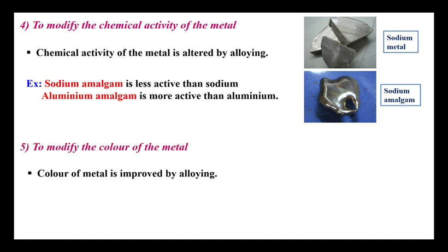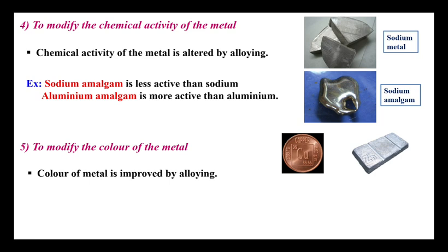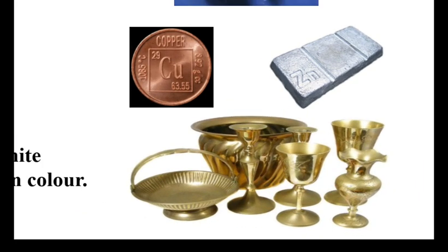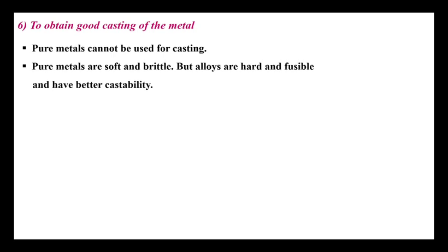The fifth point is to modify the color of the metal. The color of metals can be improved by the alloying process. For example, copper is red in color and zinc is silver-white, but when these two metals are combined into a single alloy, the color changes to yellow. So when metals of different colors are combined into an alloy, the color is modified and improved for various uses.